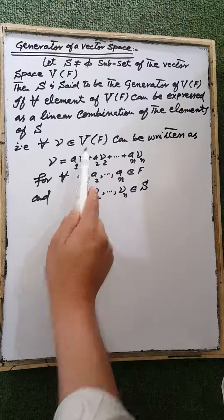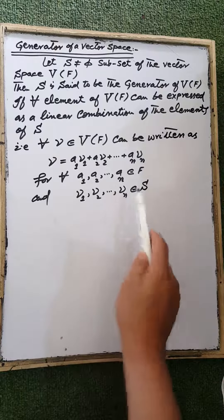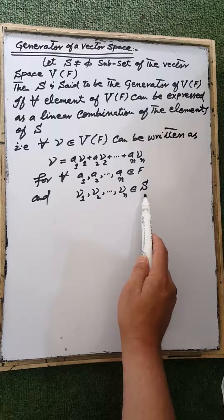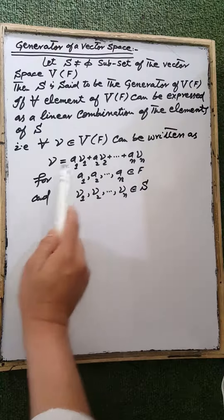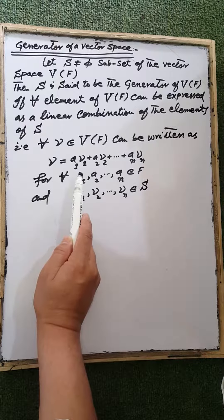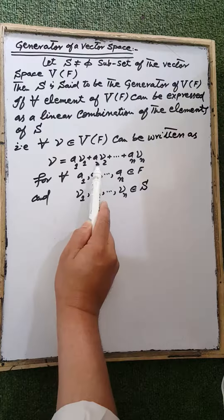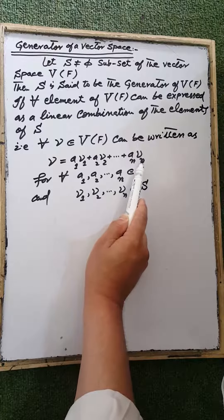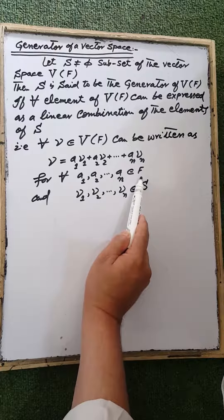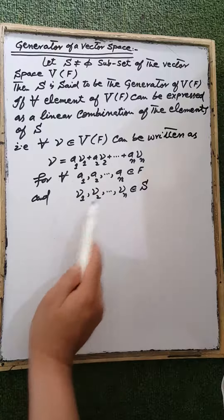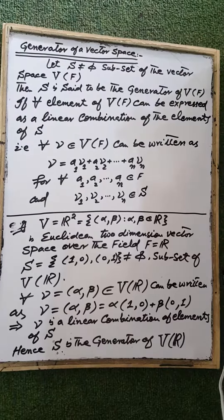That is, for each vector w belonging to the vector space V over the field F, w can be written as a linear combination of the elements of the set S: a₁v₁ + a₂v₂ + ... + aₙvₙ, such that each scalar a₁, a₂, ..., aₙ are elements of the field F, and v₁, v₂, ..., vₙ are elements of the set S.